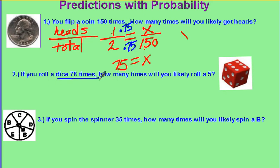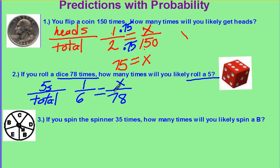If you roll a dice 78 times, how many times will you likely roll a five? Start with what you need to know. How many fives there are compared to how many total sides. So your ratio of getting a five is one to six, but you want to know for 78 how many you will get.